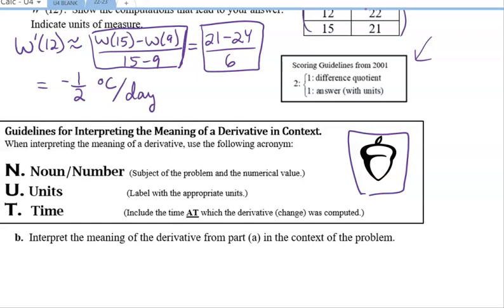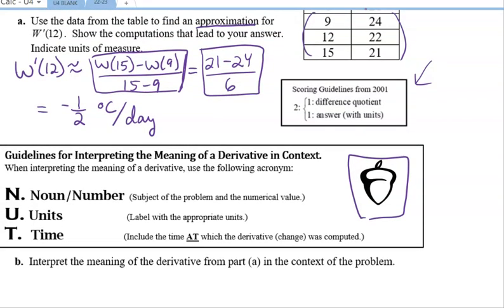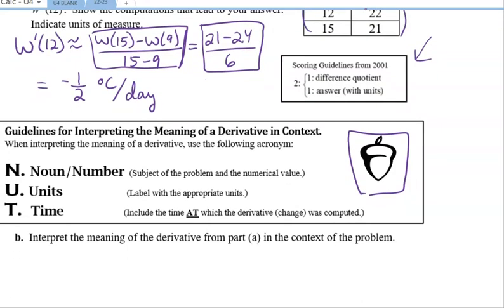So this is to help us remember to have all of the pieces when we interpret a derivative statement. So the first, the N means that we need to have a noun and the number that goes with that. So in other words, the subject of the problem and numerical value. In this case, it's going to be the change in the temperature. And then the U is the units. We have to have correct units, and usually, if you're interpreting a derivative, it is a rate, so you should have a rate unit as well. And then T, the time, means the specific instance where we found our derivative or where we are approximating our derivative.